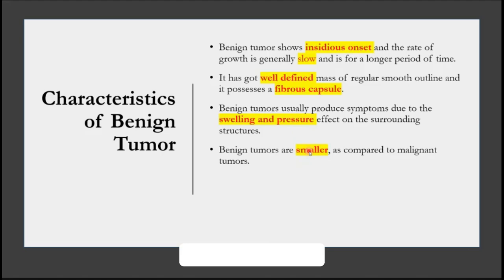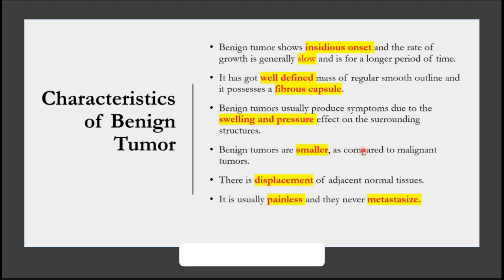Benign tumors are normally much smaller — they don't grow to a very huge size except in some cases, compared to malignant tumors. There is usually displacement of the adjacent normal tissue especially when they're growing big and applying pressure. They are painless and they never metastasize. The spread of a malignant tumor can go from epithelium to connective tissue, and when malignant it can metastasize to distant organs like liver, heart, and kidney and can cause death. Death is not because of the primary tumor itself but because those vital organs fail. This does not happen in benign tumors.